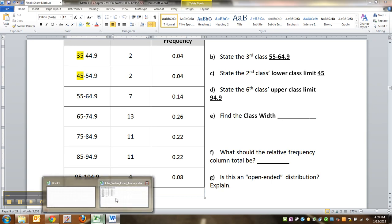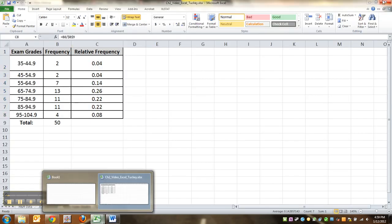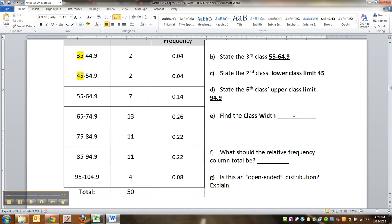Okay, find the class width. Now the class width is what everybody does incorrectly, so be careful. What you want is the distance between lower class limits. So look at this: 35 to 45, 45 to 55, 55 to 65. How far apart are these numbers? Because these will be the tick marks on your horizontal axis.